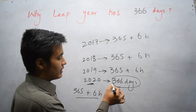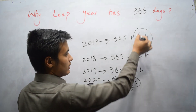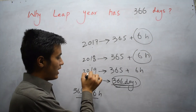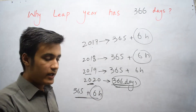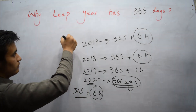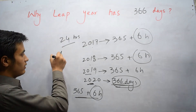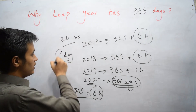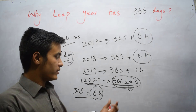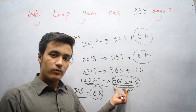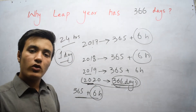The leap year consists of 366 days because the 6 hours from 2017, 2018, 2019, and 2020 all add up and make 24 hours, and 24 hours equals 1 day. So every 4th year has 366 days, making it a leap year.